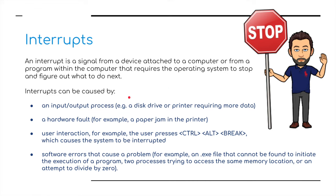Interrupts can be caused by: an input-output process, such as a disk drive or a printer requiring more data; a hardware fault, for example a paper jam or the printer running out of paper; user interaction — on a Windows PC we generally press Ctrl-Alt-Del if something has gone wrong and something needs to be reset; and finally, software errors, for example an executable file that cannot be found to initiate a program, two processors trying to access the same memory location, or an attempt to divide by zero. All of these are problems that require an interrupt.